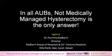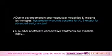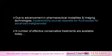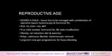AUB — abnormal uterine bleeding — can occur in the adolescent phase, in the reproductive age group, and in the perimenopausal age group. Due to advancement in pharmaceutical modalities and imaging technologies, hysterectomy sounds obsolete for AUB except for advanced malignancies. A number of effective conservative treatments are available today. For adolescents, you treat the cause and give the absent bleeding factors. No hysterectomy for adolescents. For the reproductive age group — she desires a child, you want to remove her uterus? No way.